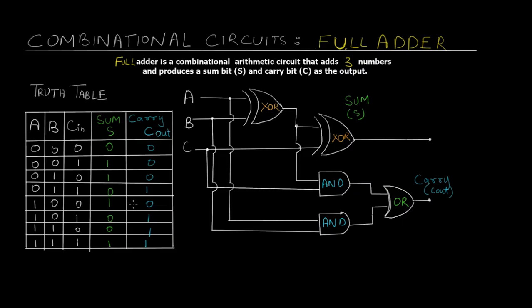A full adder is a combinational arithmetic circuit that adds three numbers and produces a sum bit and a carry bit as the output. The only difference between a full adder and half adder is that the half adder can add two bits at a time, but a full adder can add three bits at a time. There is also a difference between the logic diagram and expression as well.